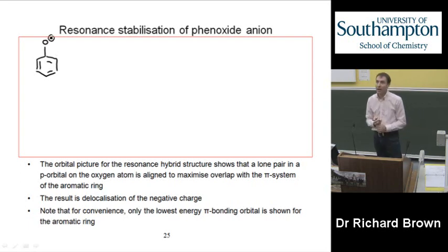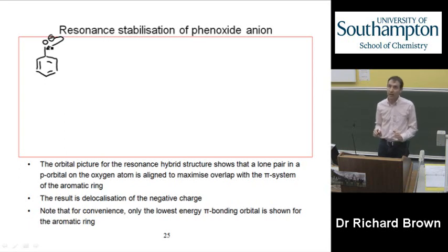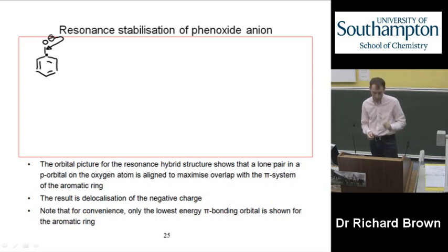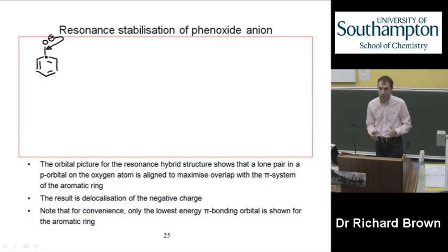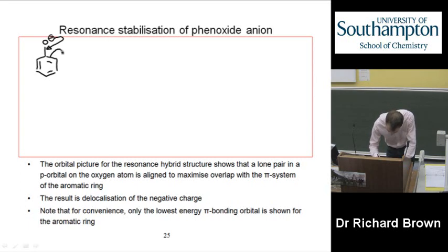We're looking at how the phenoxide ion is stabilised through resonance. We can draw a pair of curly arrows — one going down there. We can't just leave that structure, because that represents forming a new carbon-oxygen double bond. This carbon already has eight valence electrons, so we have to remove one of the pairs of electrons in another bond to that carbon atom. We can represent that with a second curly arrow.